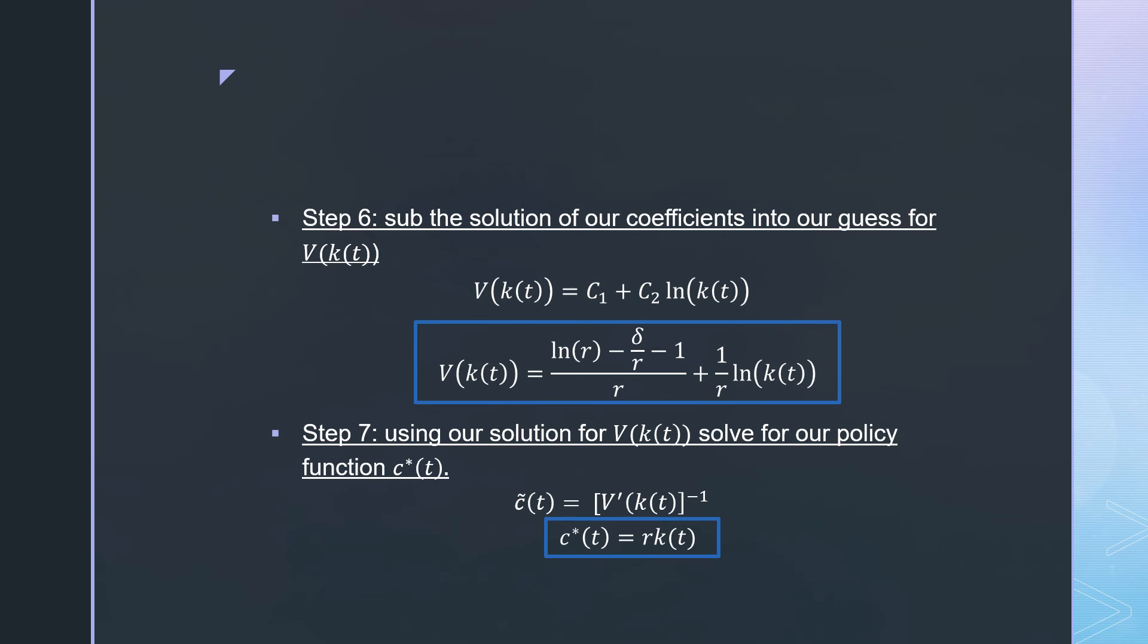Next, we're going to sub our solution of our coefficients into our initial guess for V(k(t)). We have our guess here and we're just plugging in our values for our coefficients—the one that we solved for and the one that we just defined.